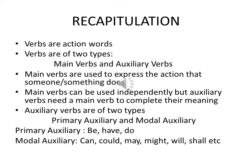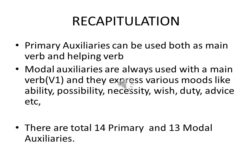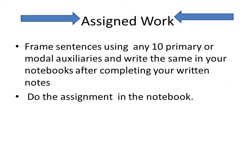Auxiliary verbs are of two types: primary auxiliary and modal auxiliary. There are three primary auxiliaries, that is be, have and do. And verbs like can, could, may, might, will, shall, would, should, etc. are used as modal auxiliaries. Primary auxiliaries can be used both as main verb and helping verb. But modal auxiliaries are always used with the main verb, that is the first form of the verb, and they express various modes like ability, possibility, necessity, wish, obligation, etc. There are a total of 14 primary and 13 modal auxiliaries. Thank you.